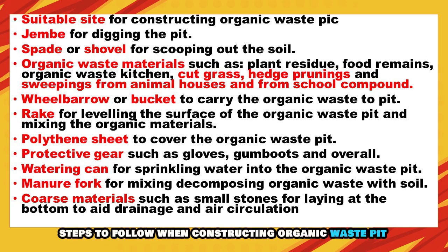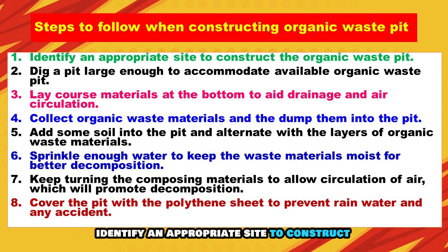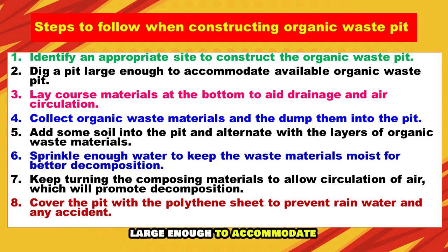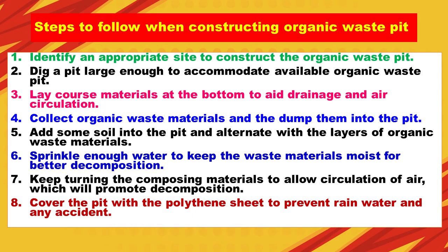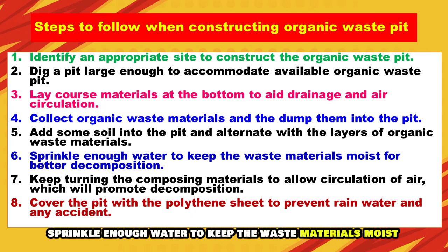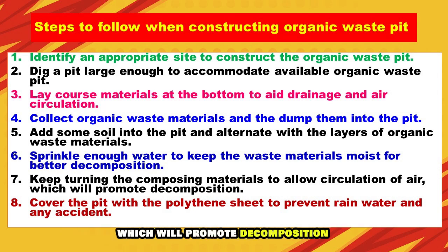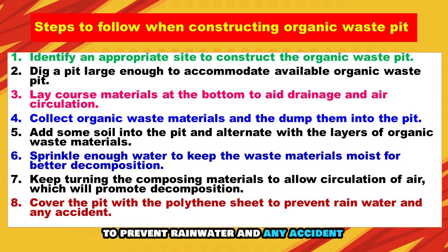Steps to follow when constructing an organic waste pit: Identify an appropriate site. Dig a pit large enough to accommodate available organic waste. Lay coarse materials at the bottom to aid drainage and air circulation. Collect organic waste materials and dump them into the pit. Add some soil into the pit, alternating with layers of organic waste materials. Sprinkle enough water to keep the waste materials moist for better decomposition. Keep turning the composting materials to allow circulation of air, which will promote decomposition. Cover the pit with a polythene sheet to prevent rainwater entry and any accidents.